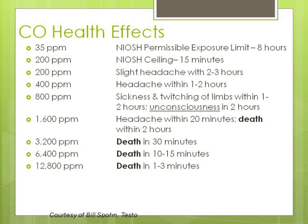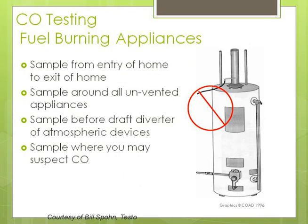When testing for carbon monoxide, you sample at the entry of the home, around all unvented appliances, and before the draft diverter of atmospheric appliances. The draft diverter — that little hat on the hot water heater — is supposed to funnel flue gases into the flue and take them away. You also sample anywhere else you'd expect to find carbon monoxide.